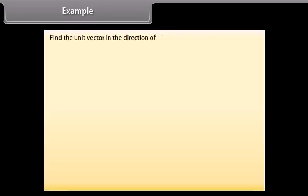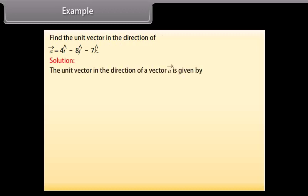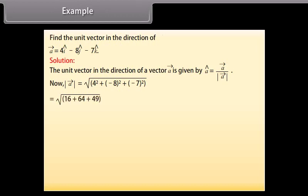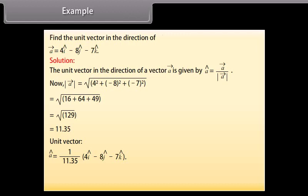Example: Find the unit vector in the direction of vector A = 4 cap I − 8 cap J − 7 cap K. Solution: The unit vector in the direction of vector A is given by cap A = vector A / |A|. Now, |A| = √(4² + (−8)² + (−7)²) = √(16 + 64 + 49) = √129 = 11.35. Therefore, unit vector cap A = (1/11.35)(4 cap I − 8 cap J − 7 cap K) = 4/11.35 cap I − 8/11.35 cap J − 7/11.35 cap K.